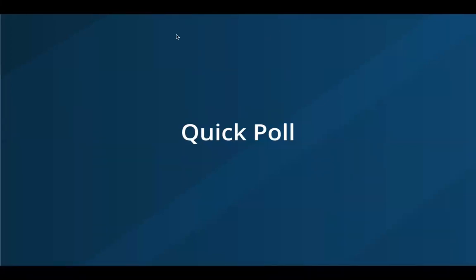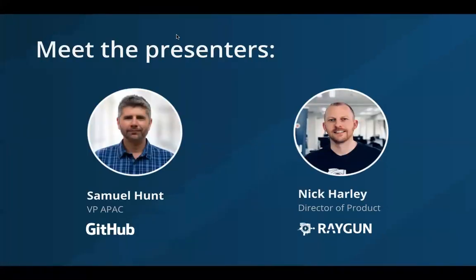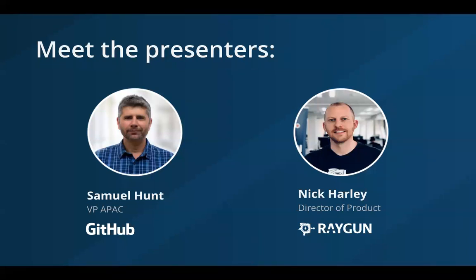So let's meet the presenters. We've got Sam Hunt, VP of APAC at GitHub, and Nick Harley, Director of Product at Raygun. Sam runs the APAC region for GitHub, working with customers and community on delivering the world's largest developer collaboration platform. Nick's job is connecting with customers, finding out what needs to be built and how, and then wrangling developers and design teams to get those through the pipeline as soon as possible.